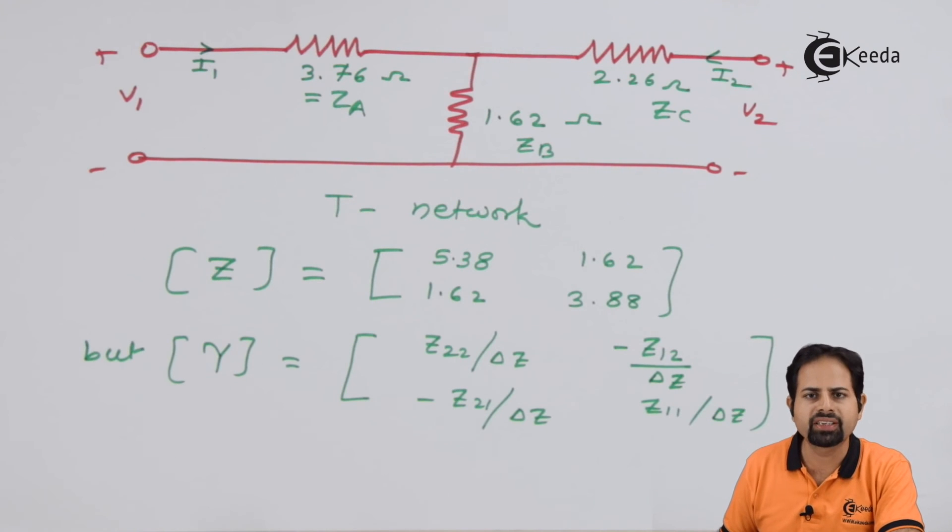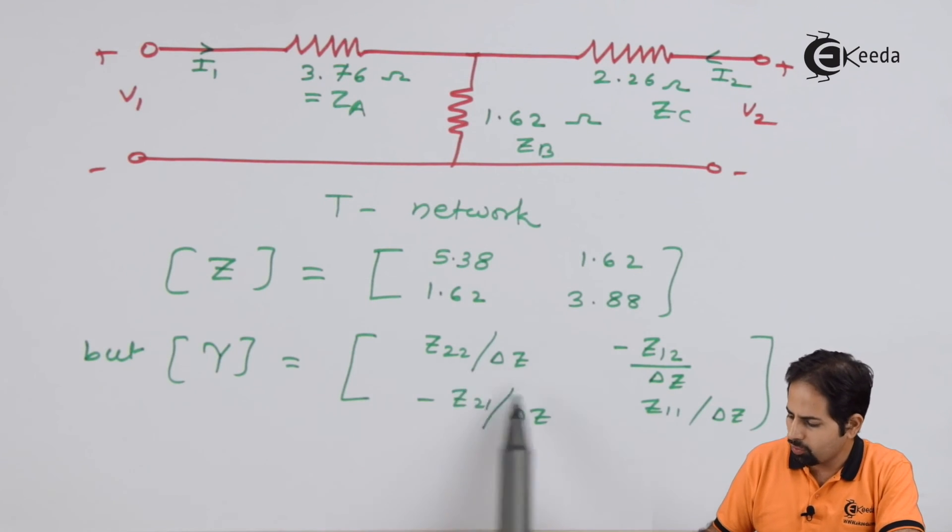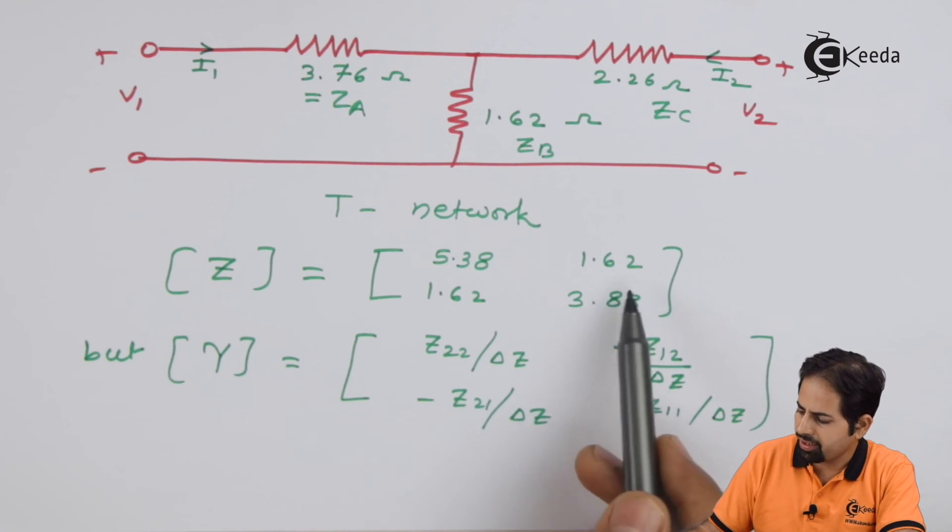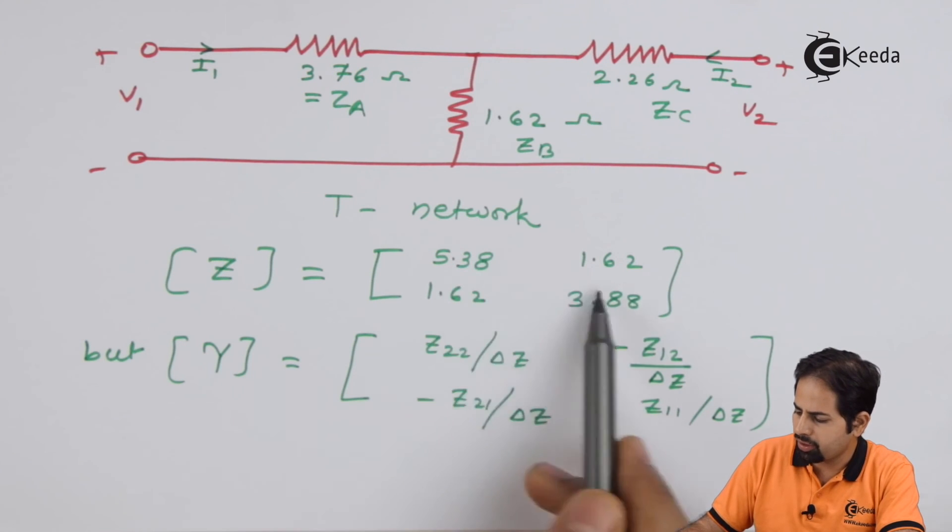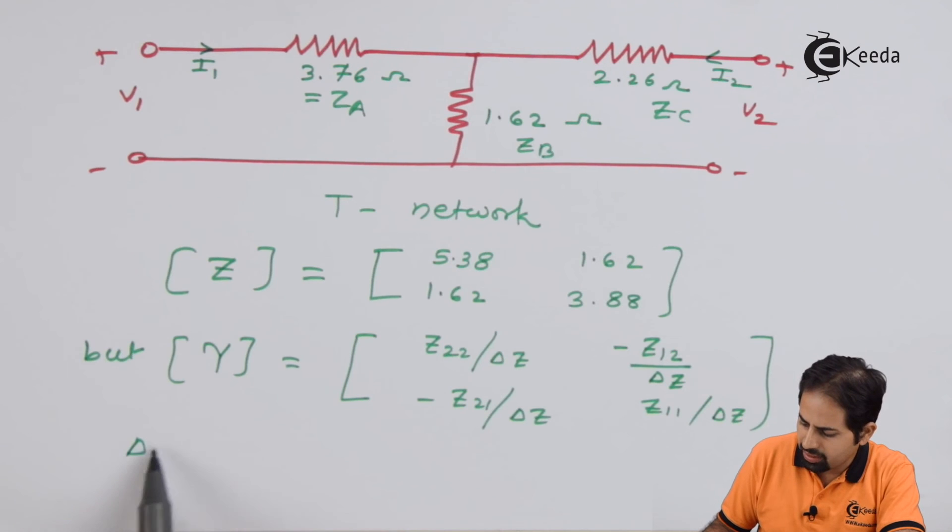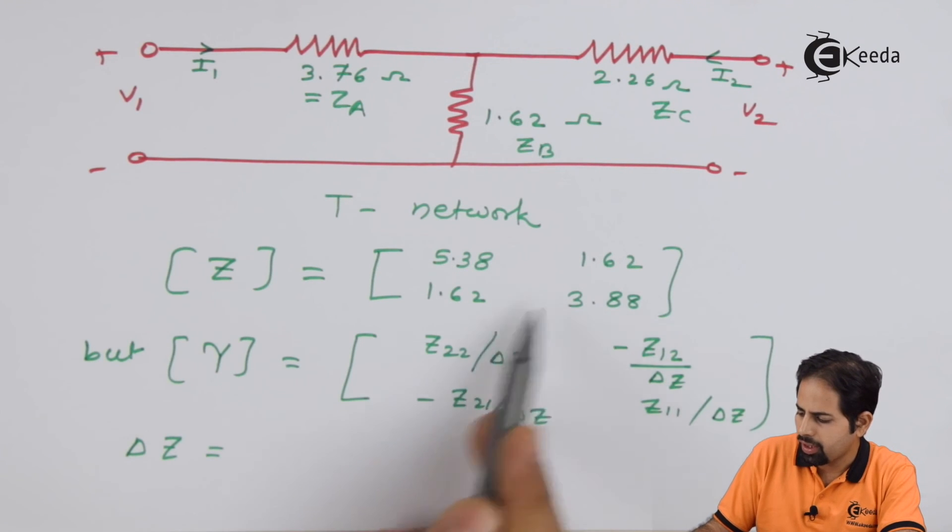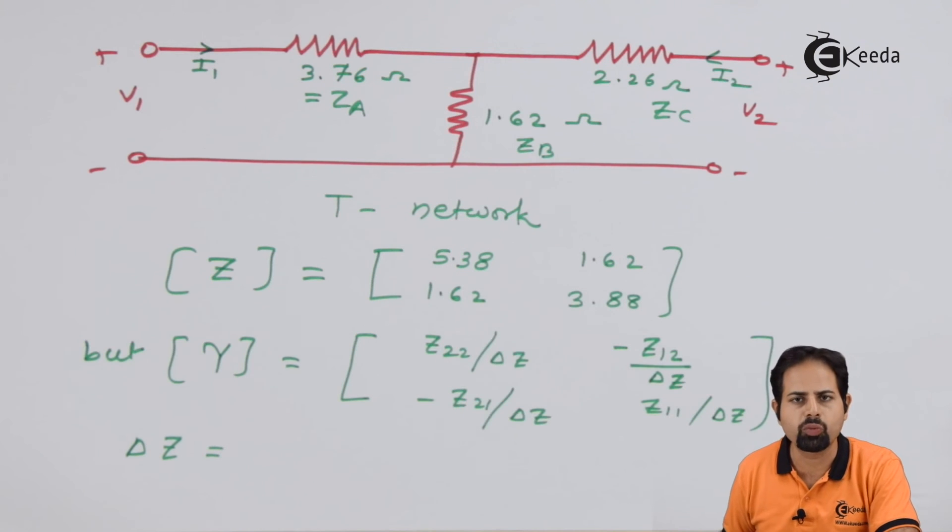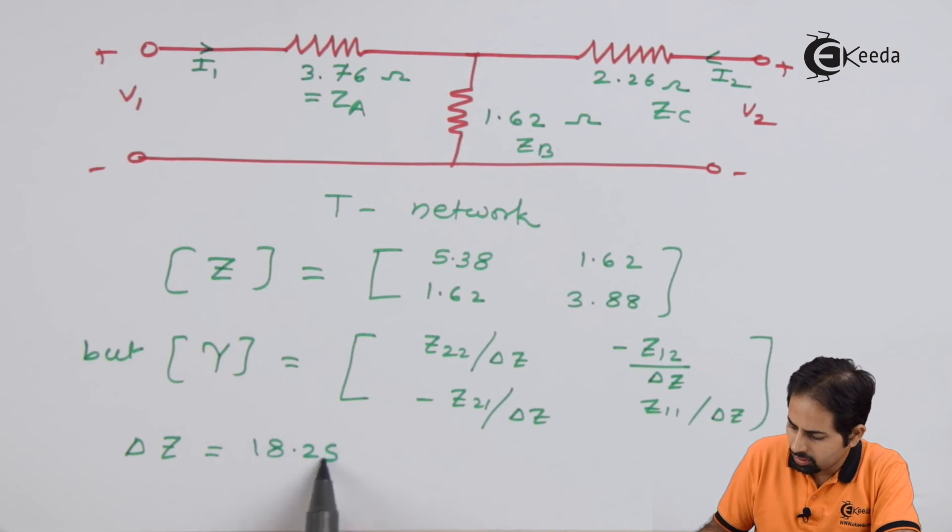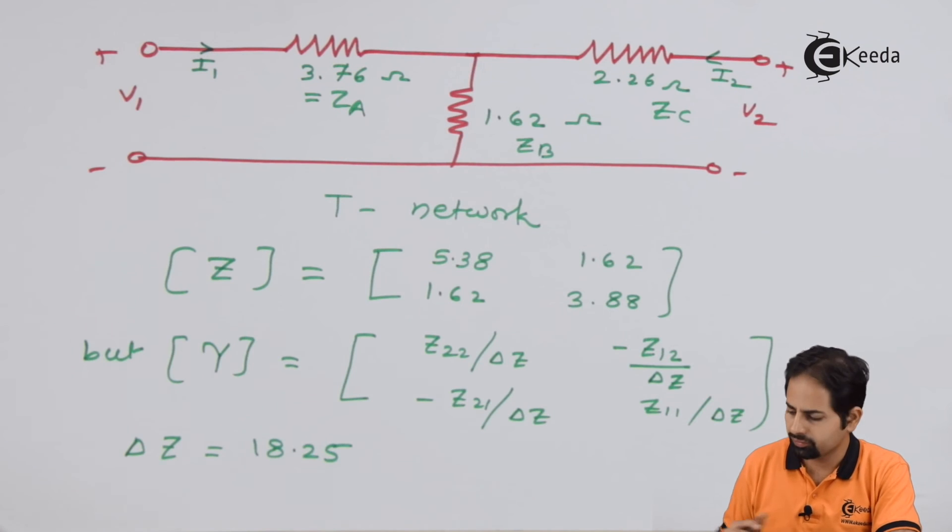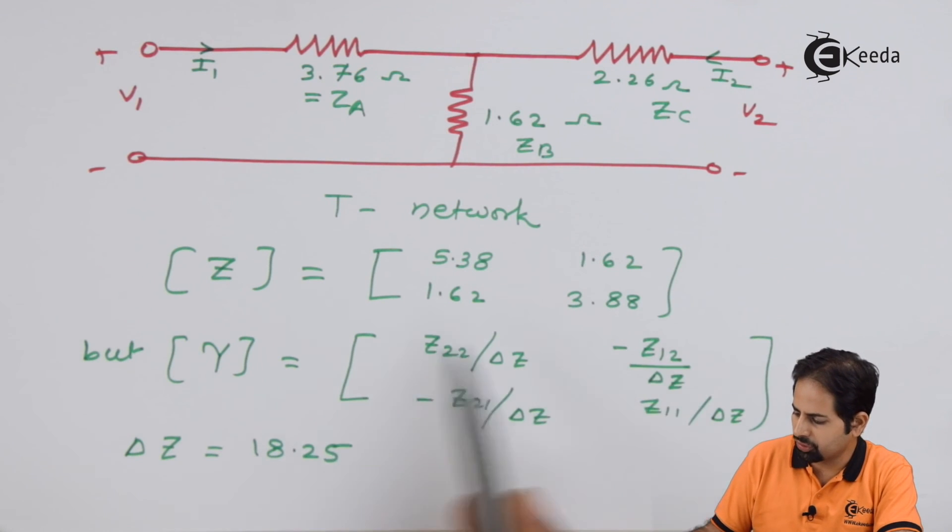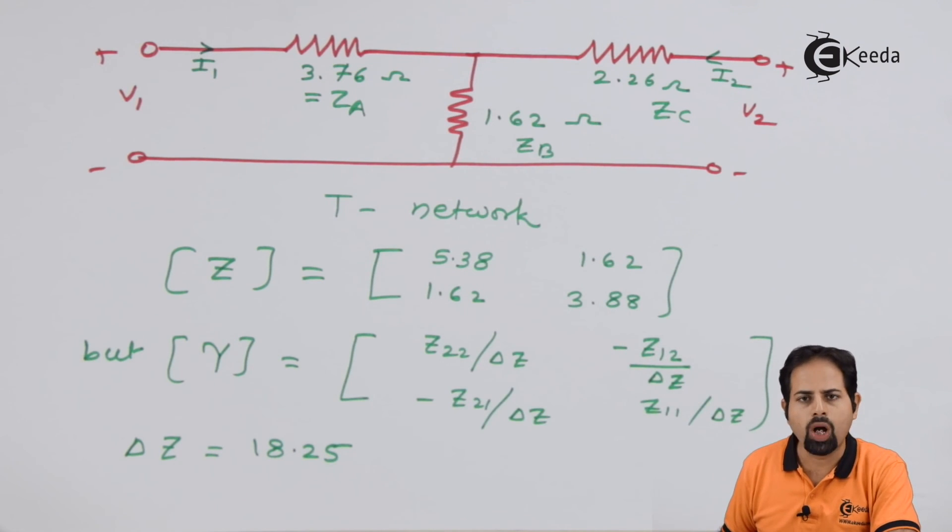So this is the Y matrix that we have obtained, but we don't know what is delta Z. We can get it from here. Delta Z means determinant of this matrix. Delta Z we can calculate 5.38 into 3.88 minus 1.62 square. So delta Z value is 18.25 and we will substitute it here and get the Y matrix.